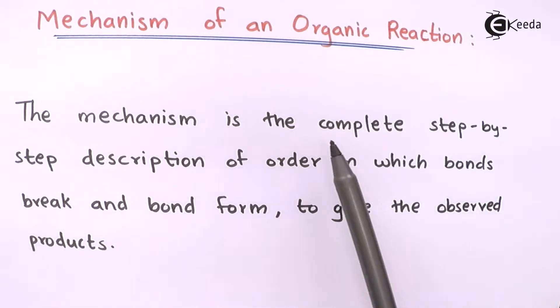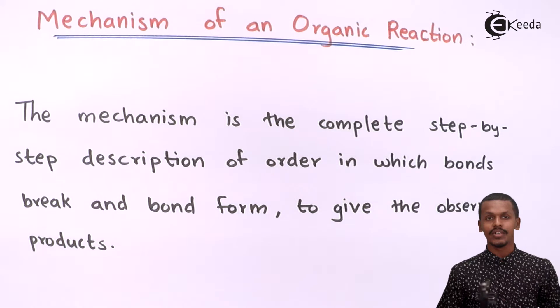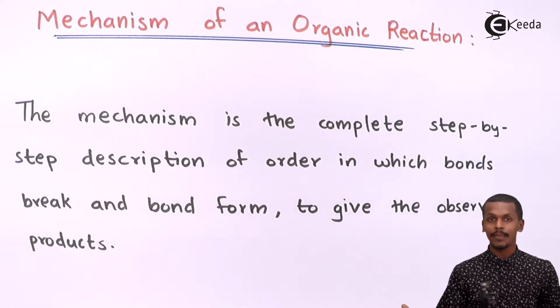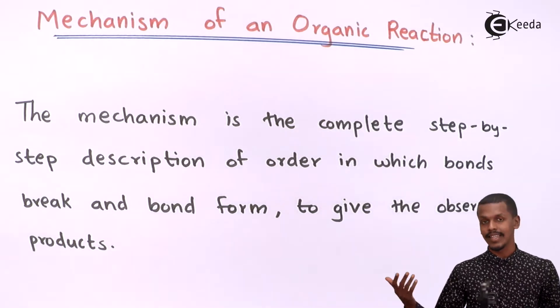The mechanism is the complete step-by-step description of order in which the bonds break and bonds form to give the observed product. Suppose if we have a reaction: reactant AB plus CD that is giving us a product.